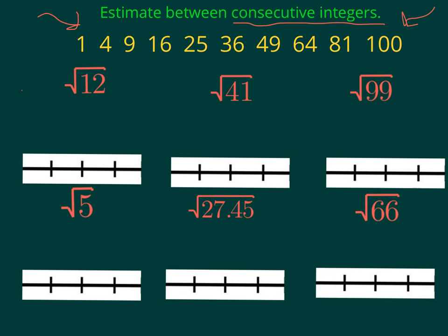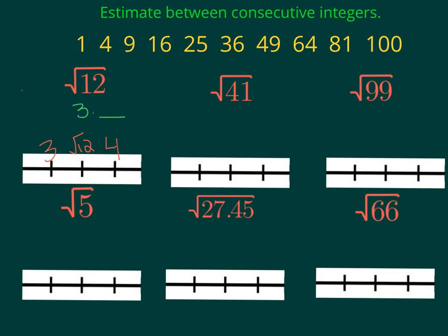So, square root of 12 — where does 12 fall? 12 falls in between 9 and 16, but we're looking at square roots. So the square root of 12 must fall in between the square root of 9 and the square root of 16. The square root of 9 is 3, and the square root of 16 is 4. So the square root of 12 falls in between 3 and 4 — if you were to evaluate it, it would be 3 point something.